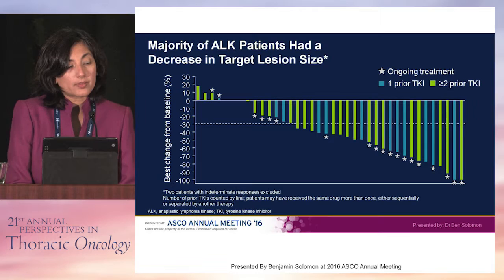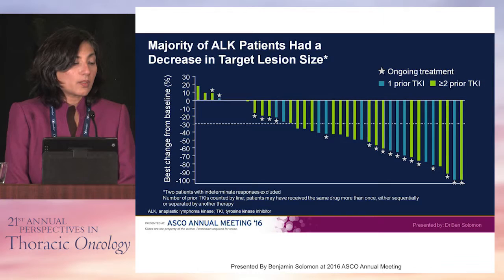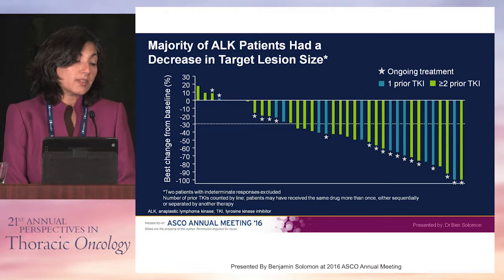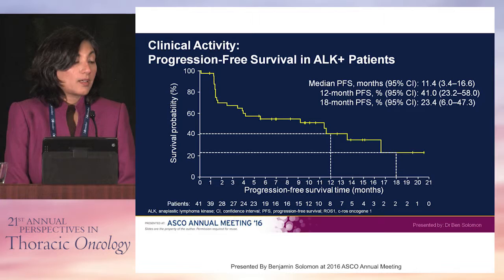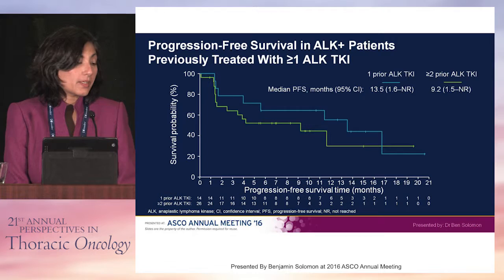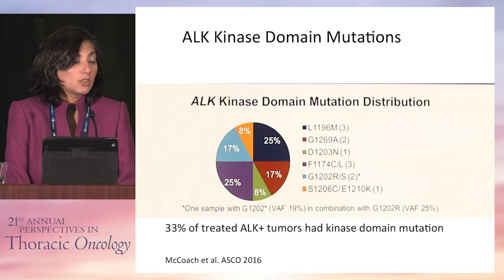In patients who were previously treated, with these small initial numbers, there is activity of lorlatinib. Many of these patients had two or more prior tyrosine kinase inhibitors, so it's compelling to know there's a possible third-line agent for this population. The median PFS was 11.4 months, and the 18-month progression-free survival was 23%, slightly favoring the less heavily treated population.